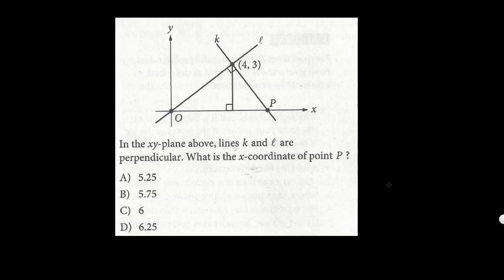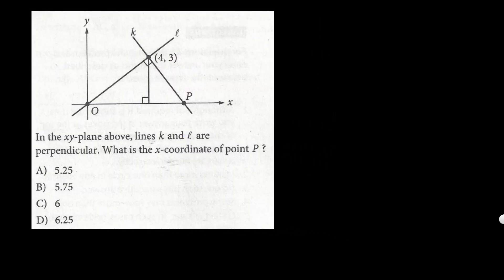You may pause the video and try this problem by yourself first. We have two lines, L and K, and they are perpendicular to each other. That means if we know the slope for L, then the slope for line K will be the negative reciprocal.